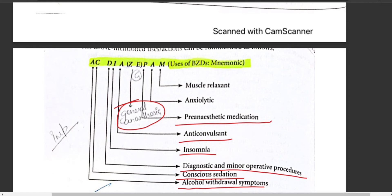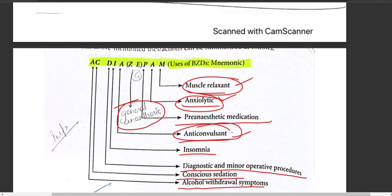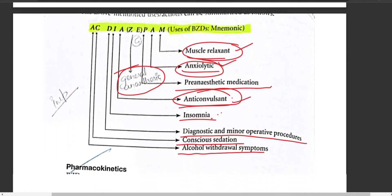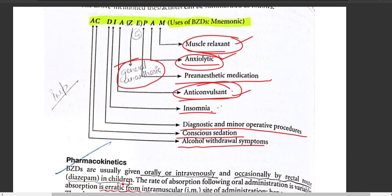P = Pre-anesthetic medication; A = Anti-convulsant property; A = Anti-anxiety; M = Muscle relaxant. So the full mnemonic AC DIAZEPAM covers: Alcohol withdrawal syndrome, Conscious sedation, Diagnostic procedures, Insomnia, Anti-convulsant, pre-Anesthetic medication, Anti-anxiety, and Muscle relaxant.